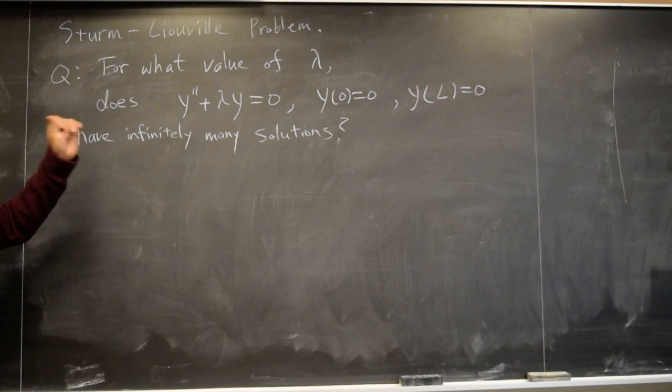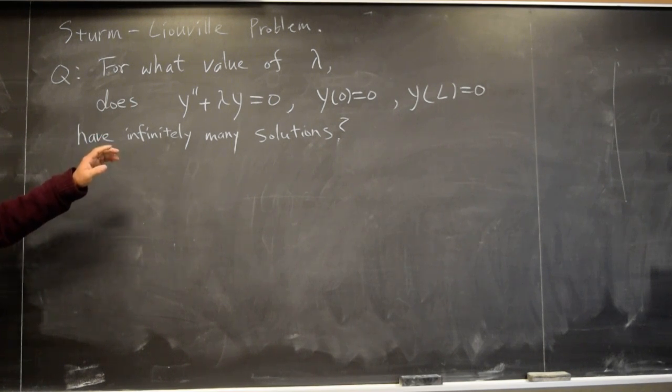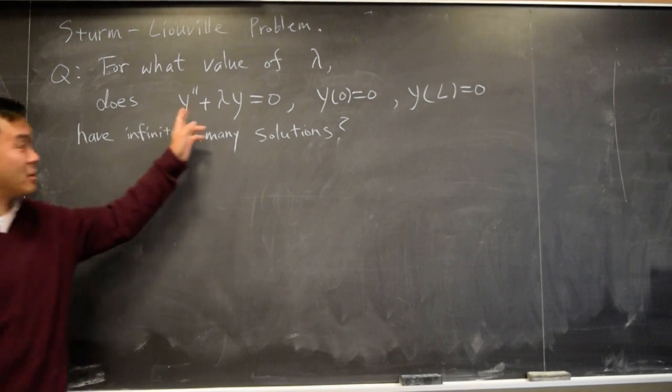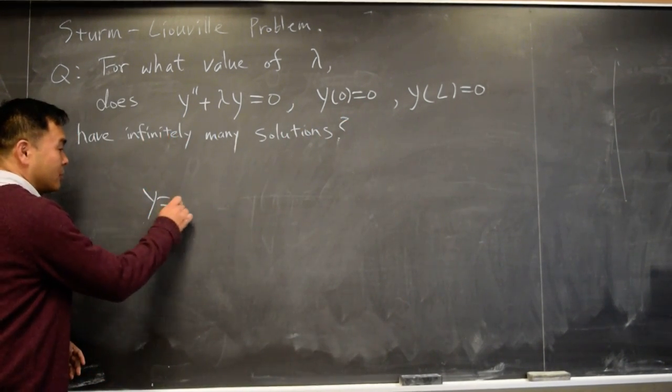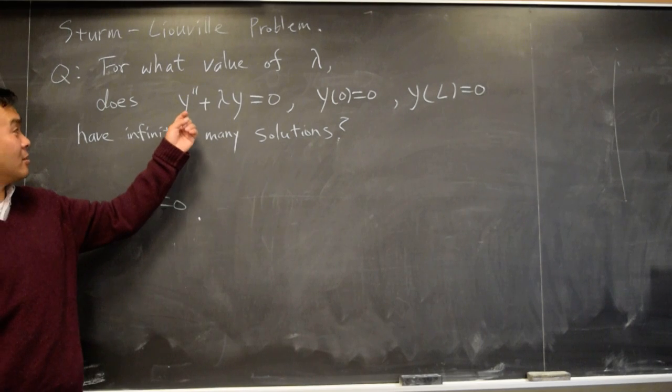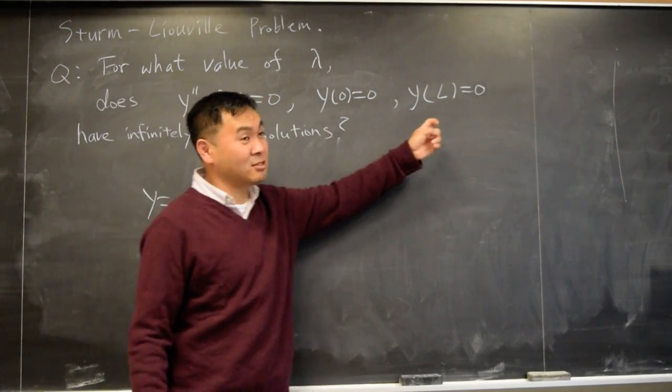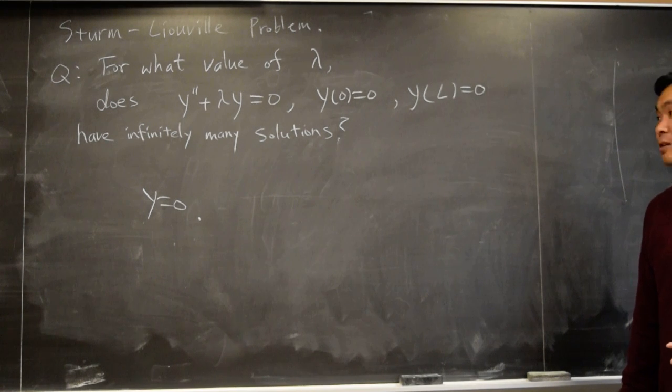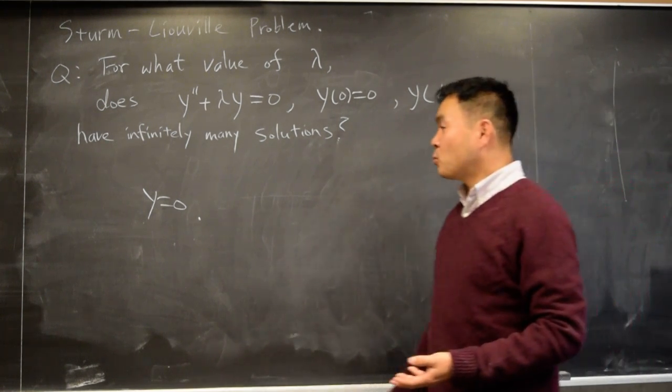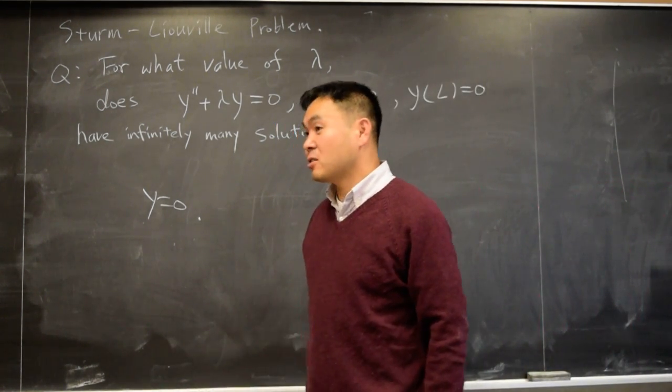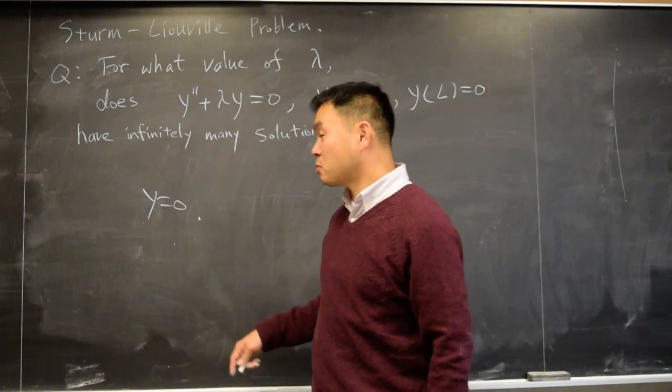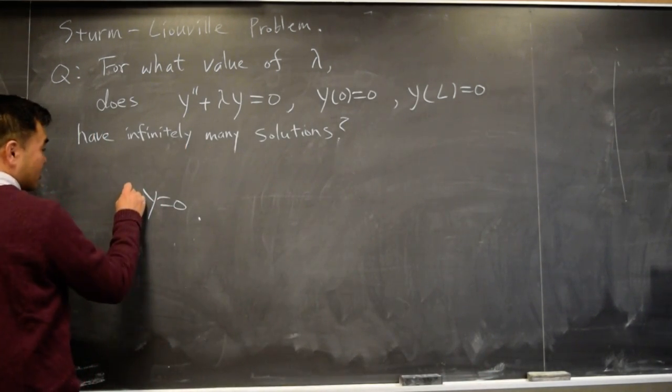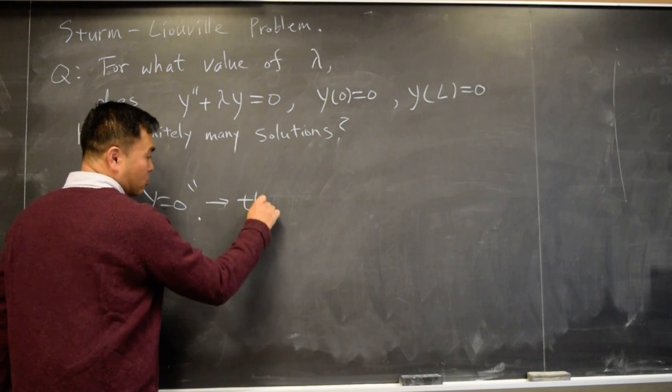So, let's think about the following. Isn't y = 0 a solution satisfying everything? If you just set y as 0, that satisfies this, that satisfies this, that satisfies this, so it satisfies everything. So, one terminology that you have to learn when dealing with the Sturm-Liouville problem is that we call this the trivial solution.